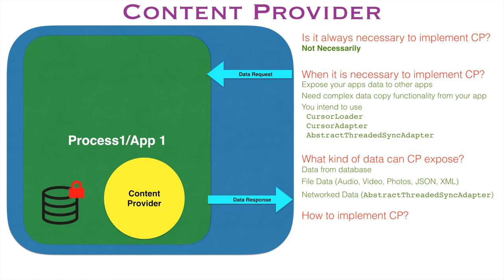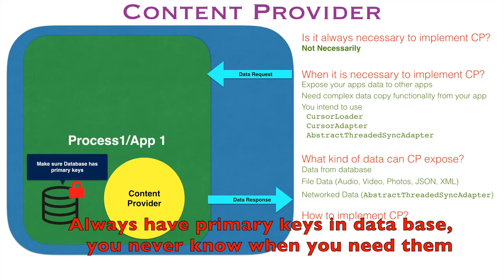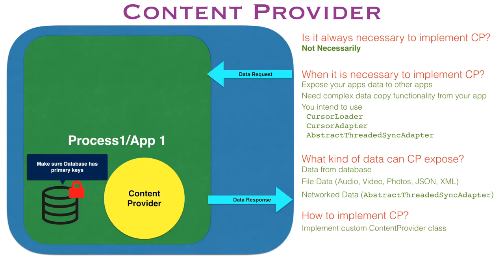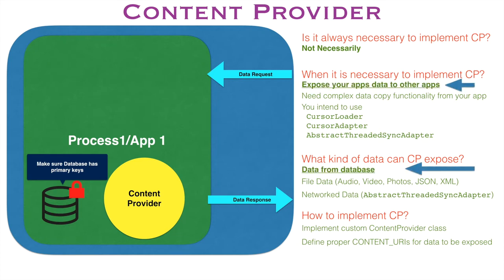First thing first: if you are using a database in your application, you have to make sure that that particular database has primary keys. If it doesn't have primary keys, then the Content Provider wouldn't work. You also have to implement a class that extends Content Provider and define the proper Content URIs to expose datasets. In our current discussion, we will restrict ourselves to two scenarios: exposing app data to other apps where the data comes from a database.